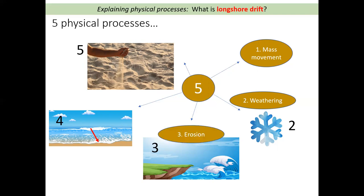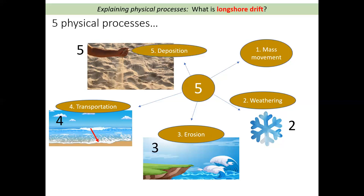Number three, the third physical process is erosion. Erosion happens after weathering — weathering is where the rock has been weakened or worn away in one place. Erosion is the wearing away of rock by moving water, and there are four types: hydraulic action, abrasion, attrition, and solution. Number four is transportation — this is about how sediment, so rocks or sand, are moved around by the ocean. And finally, deposition, which means the dropping of material by the waves.